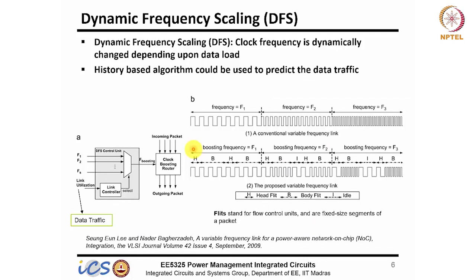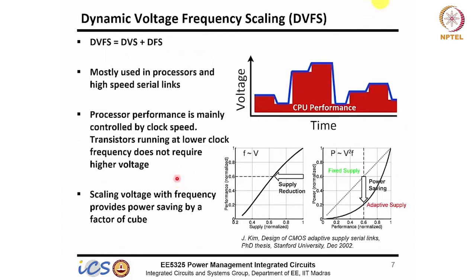In dynamic frequency scaling, you change the frequency based on data load: higher data load means higher frequency, lower load means lower frequency. This achieves better system efficiency. The plot shows voltage versus CPU performance — at lower performance you reduce voltage, at peak you go to maximum. Changing only voltage gives a linear reduction; changing both V and f together (CV²f) gives a much higher, non-linear cubic advantage, especially at low performance levels.